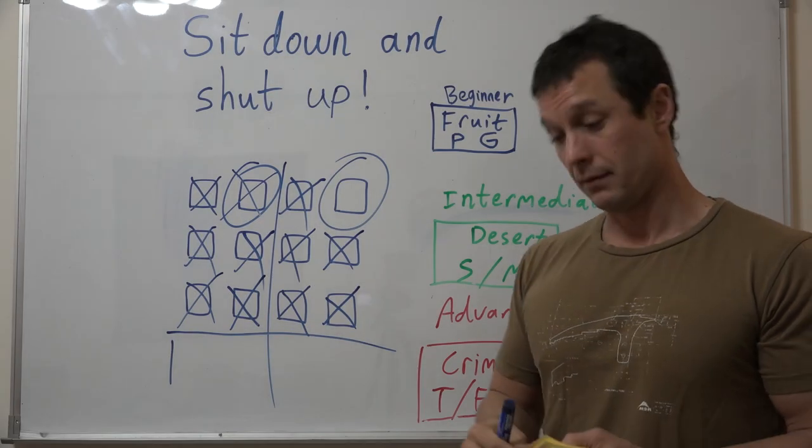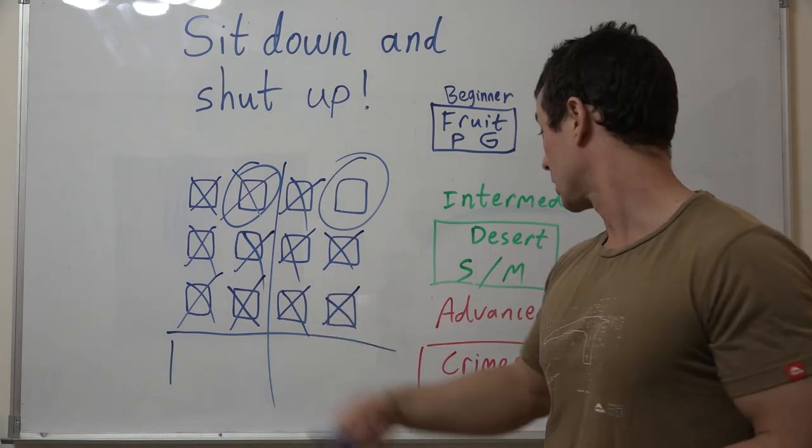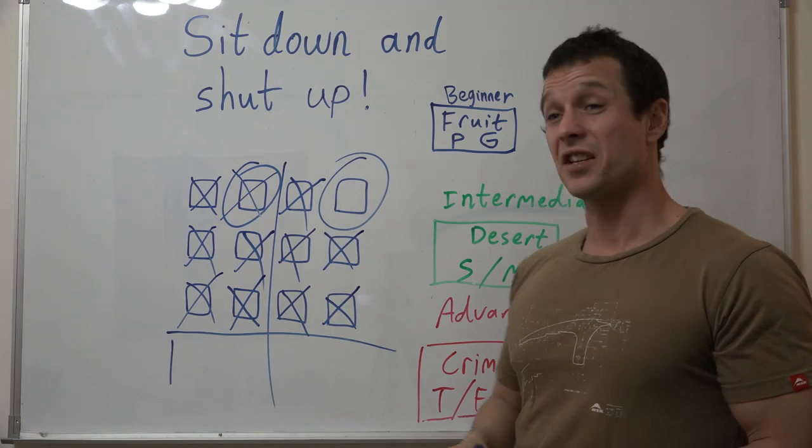Okay, intermediate. Something you see in the desert. Camel, good job, sit down, shut up. Something you see in the desert that starts with an S.